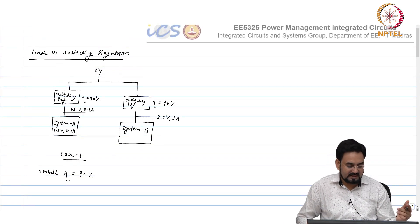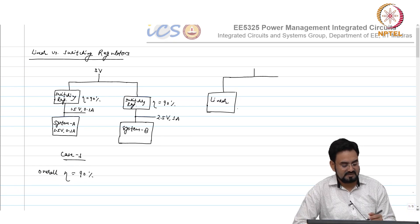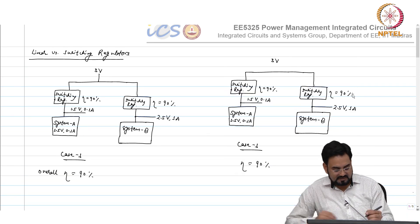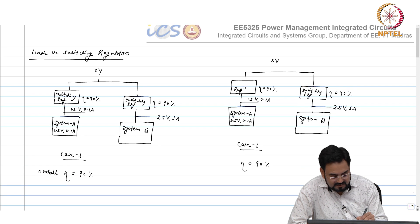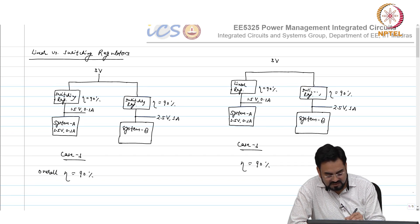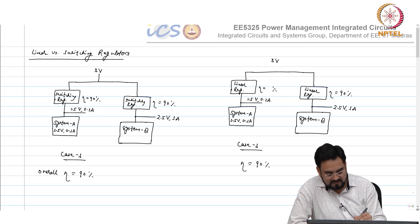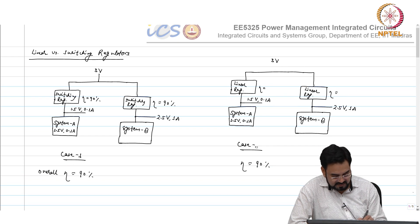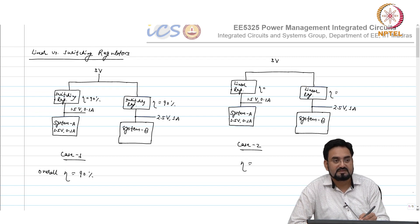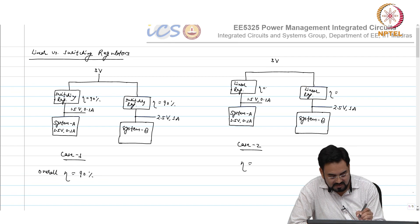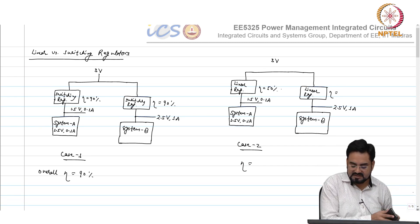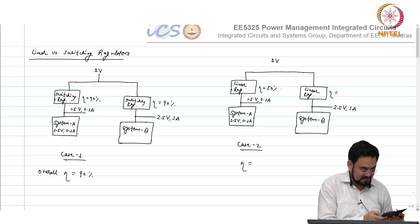Case 2: use linear regulators for both systems. For System A the efficiency is V_out/V_in = 1.5/3 = 50 percent, because we are dropping 1.5V. For System B the efficiency is 2.5/3 = 83.33 percent.